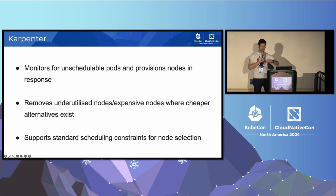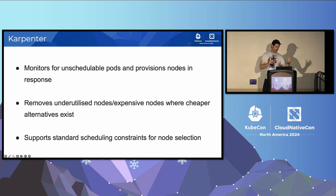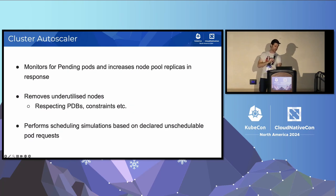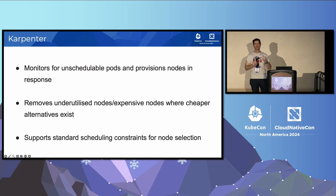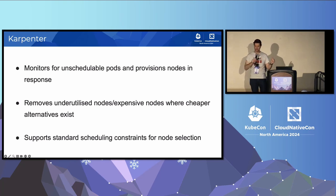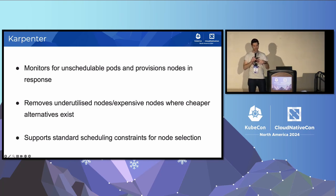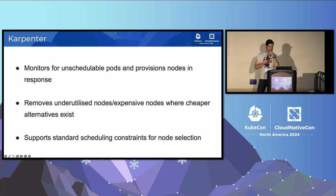Karpenter is a sister solution for autoscaling a cluster. Karpenter similarly monitors for unschedulable or pending pods, and it provisions nodes in response. The key difference from Cluster Autoscaler is in that first bullet: 'increases node replicas' versus 'provisions nodes.' Cluster Autoscaler is designed to assume a homogenous, horizontally scalable node pool and simply increases or decreases the replica count. Karpenter is more of an all-up infrastructure provisioner.